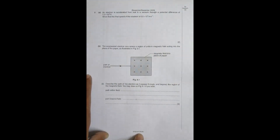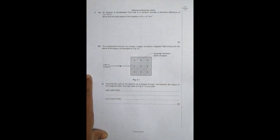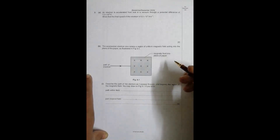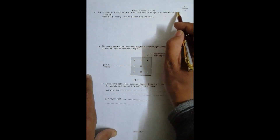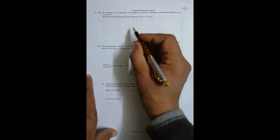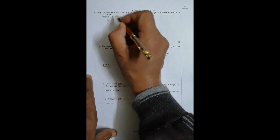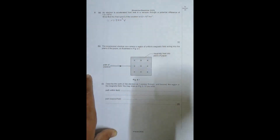Today the question is from October/November 2005 — in those days they used to call it November/December as well. It's paper full, question number 5, concerned with the chapter on magnetic fields. An electron is isolated from rest in a vacuum through a potential difference of 1.2×10⁴ volts, so V = 1.2×10⁴ V.